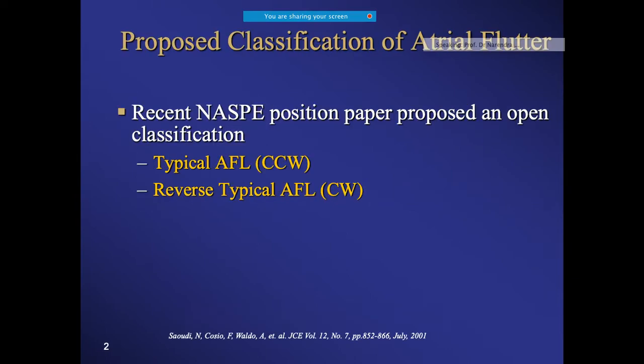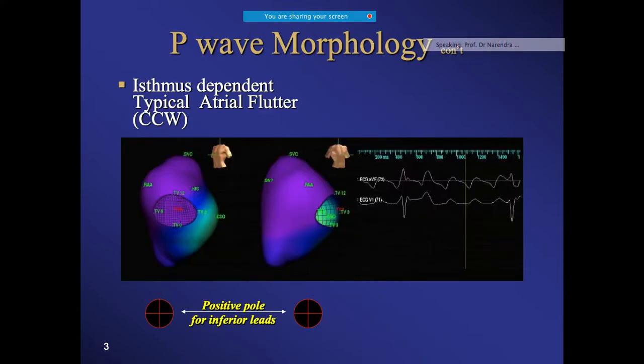The American Heart Rhythm Society has classified atrial flutter in a specific way: typical and atypical. The typical flutter is the counterclockwise type, meaning it goes against the clock, while the reverse typical is called clockwise flutter.